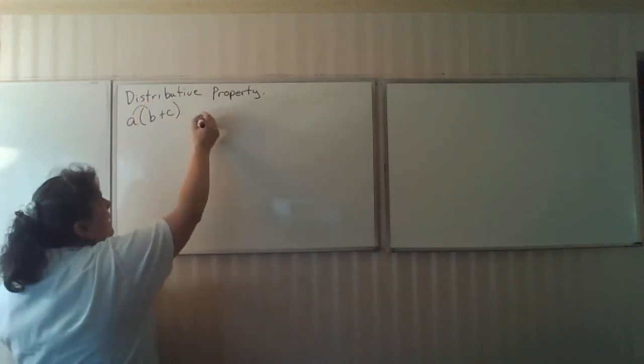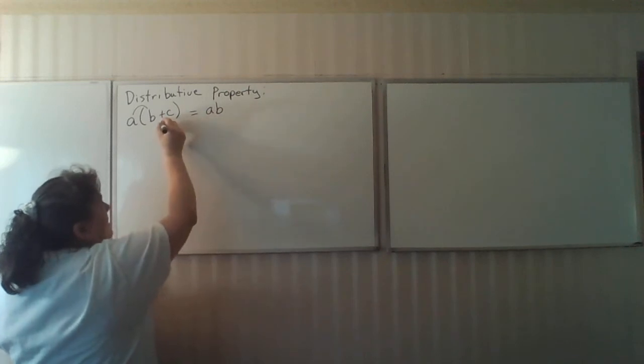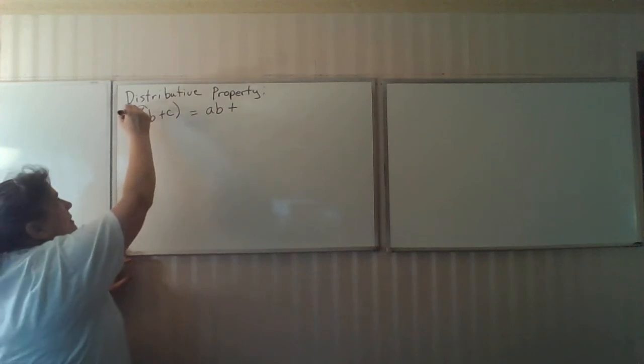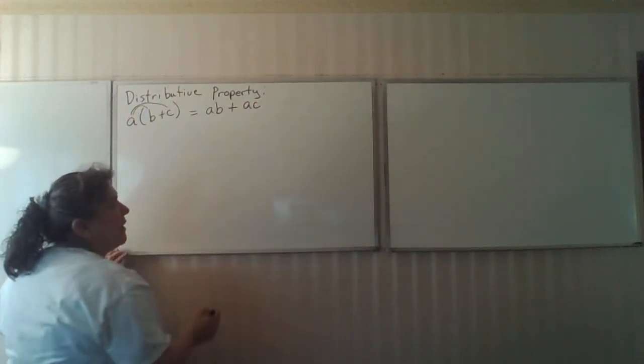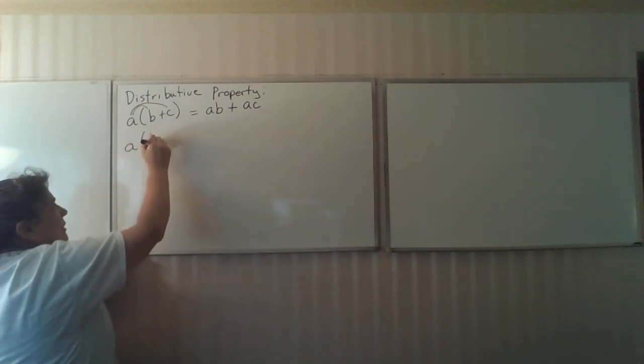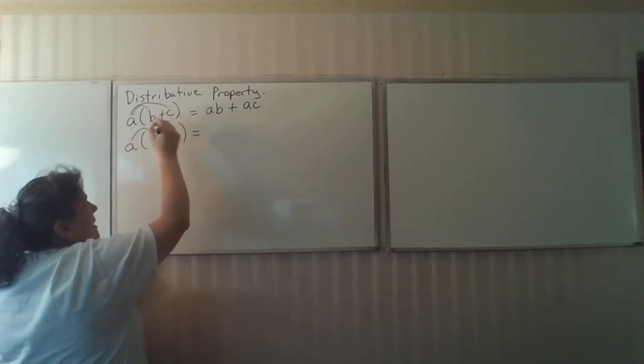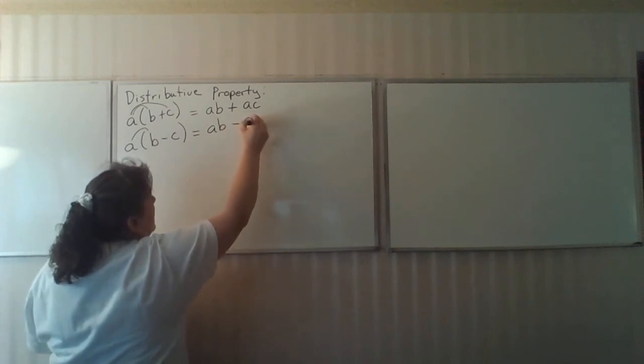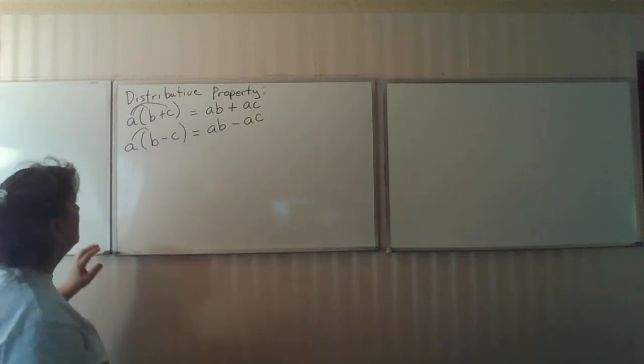That's the same thing that's happening here. My action of distribution is a multiplication. This is A times B. My sign stays according to what it is, A times C. We also have the same thing for subtraction: A times B minus C equals A times B minus A times C.